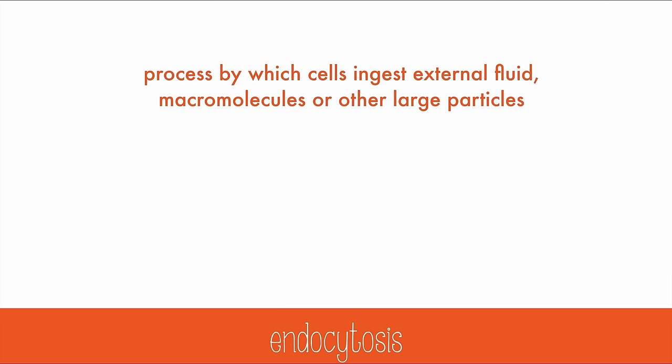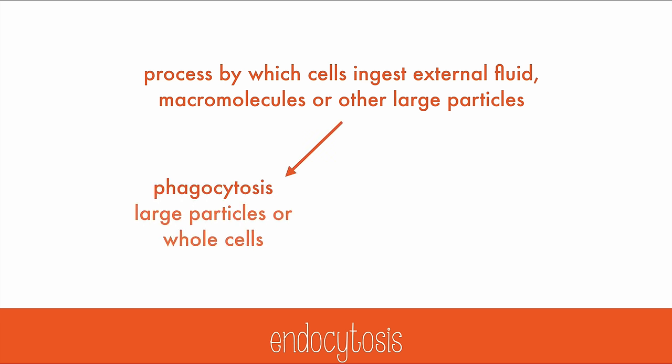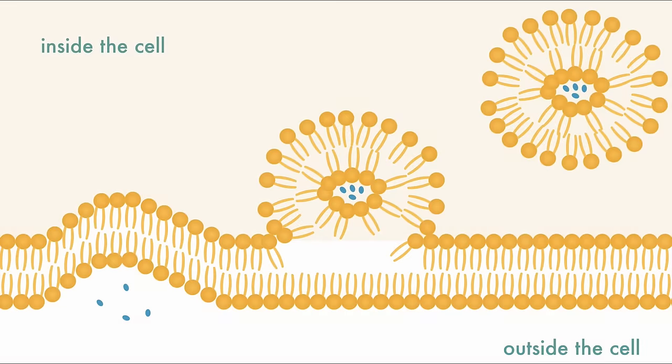We can be more specific about what materials undergo endocytosis. Phagocytosis is where large particles or whole cells are ingested, and pinocytosis is when solutes or fluids are ingested. You can think of phagocytosis as cell eating, and pinocytosis as cell drinking.